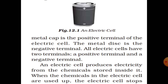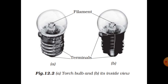An electric cell produces electricity from the chemicals stored inside it. When the chemicals in the electric cell are used up, the cell stops producing electricity and has to be replaced with a new one.